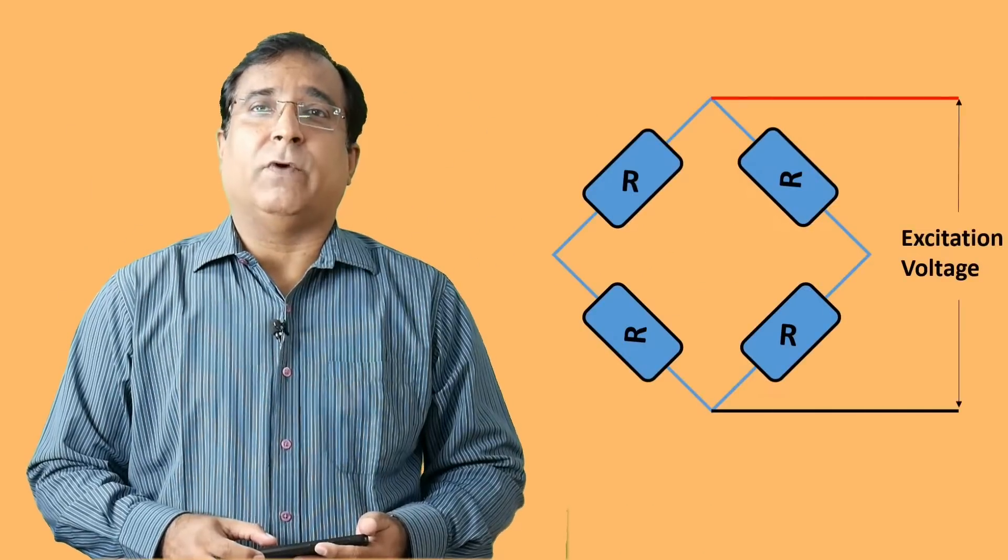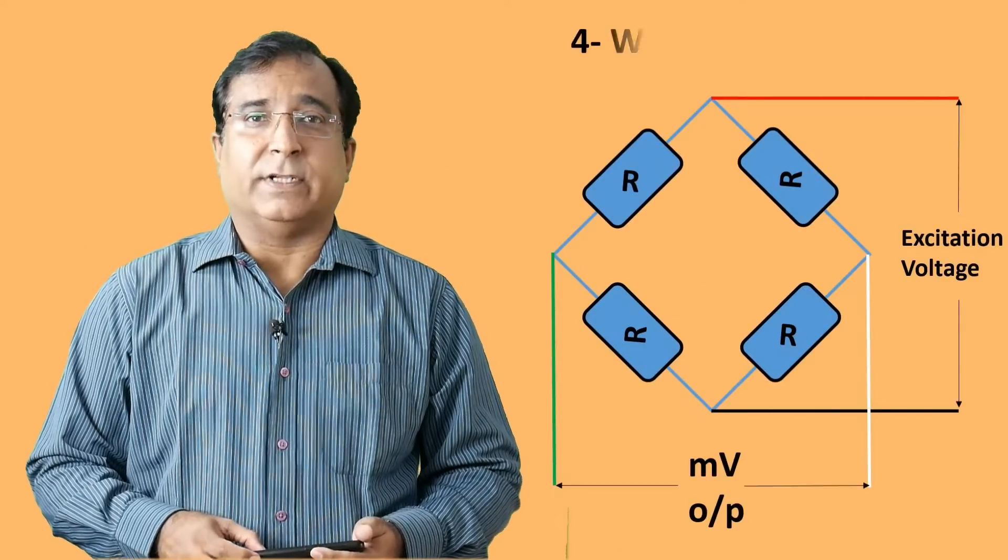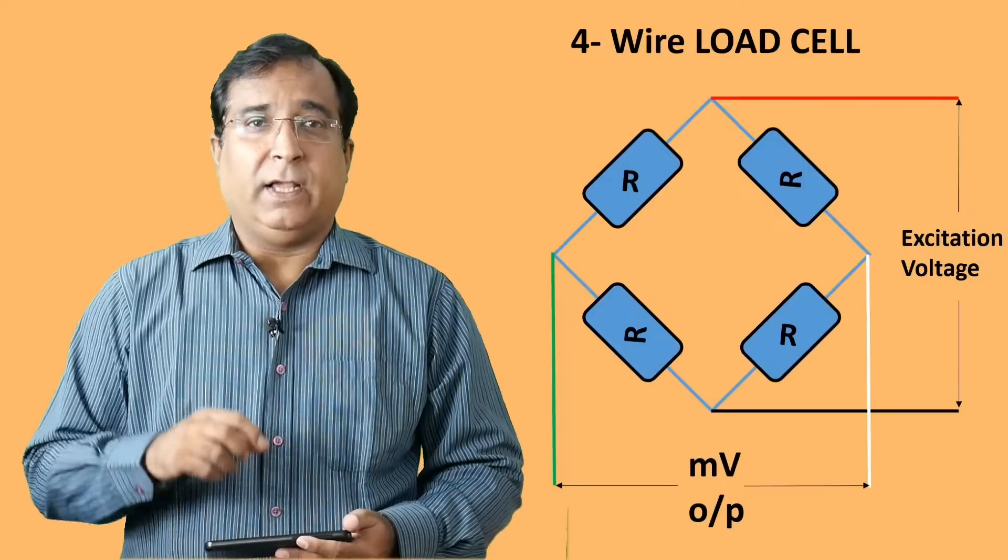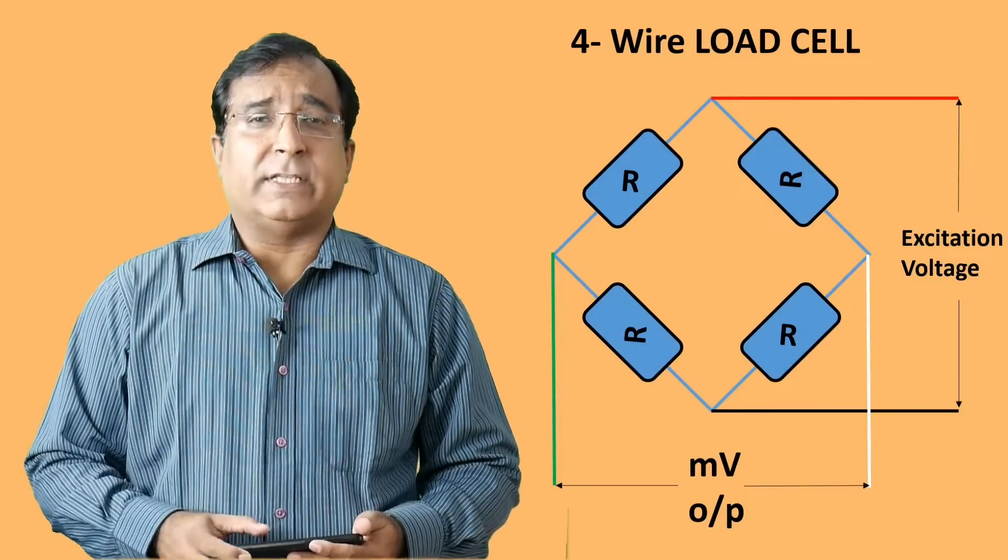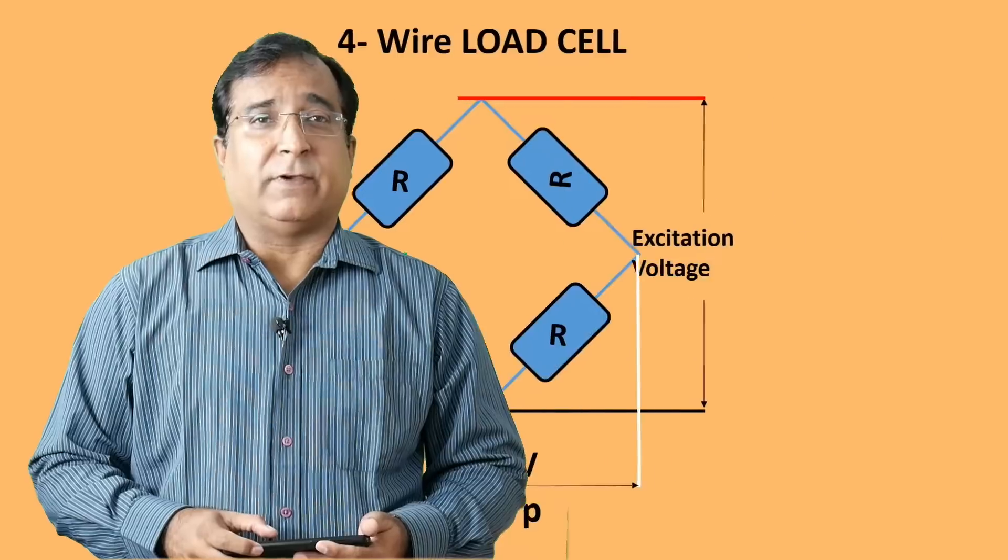There is a shield with 4 wires comes out of a load cell and excitation voltage is given on the 2 wires at opposite end of bridge and signal output is taken from the other 2 ends. Now the load cell is described by 4 wire or 6 wire also.